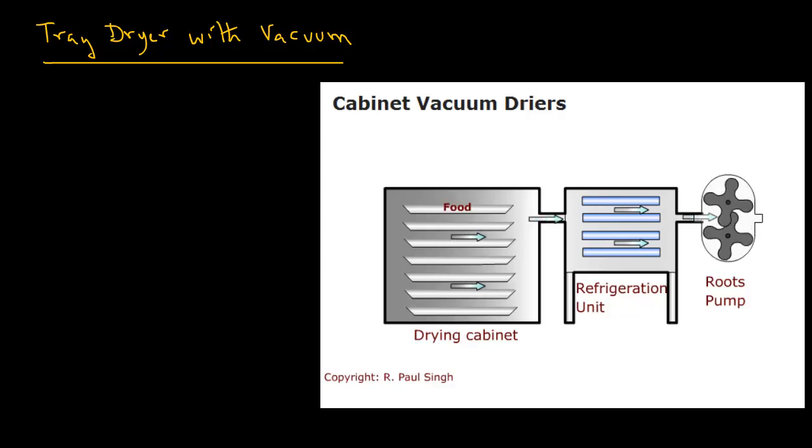A variation of a cabinet dryer is the use of vacuum. In this case, the trays are placed inside the drying cabinet and the cabinet is subjected to low pressure by use of a vacuum pump. The vacuum pump pulls the air from the cabinet dryer through a condenser where the moisture coming from the product is condensed.